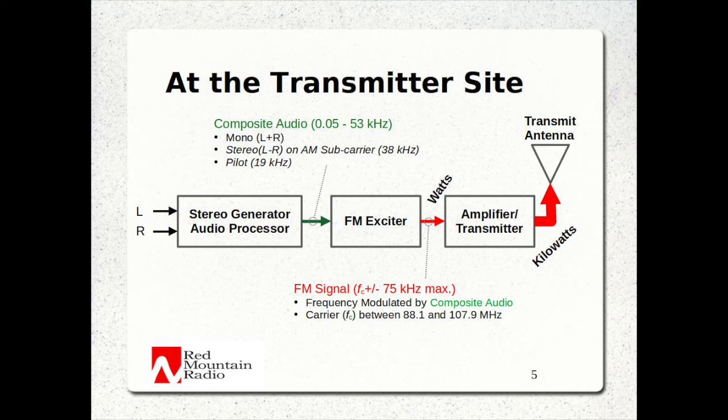The audio is also processed to increase its average volume while holding the peak levels fixed, and the audio is also high-pass filtered for reasons we'll get to shortly. The output of the signal processing must be set to give a peak FM deviation of precisely plus or minus 75 kHz. This composite audio is then sent to the exciter, which is the FM modulator. It delivers an FM signal at its output with a power on the order of watts, which is then amplified to the order of kilowatts in the transmitter and sent to the broadcast antenna. The exciter and transmitter functions are often combined into a single unit these days.